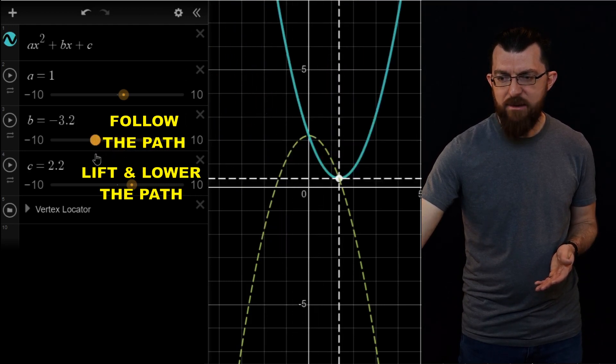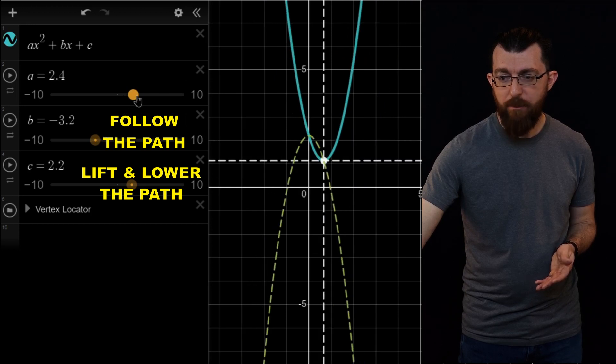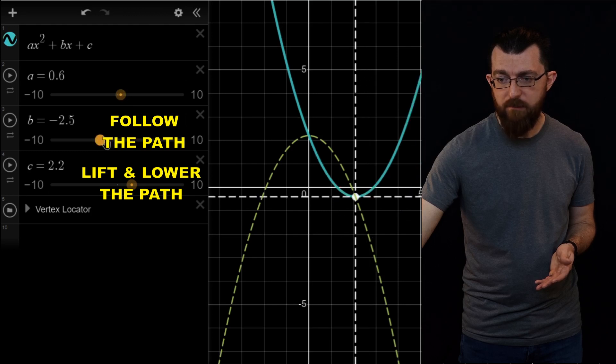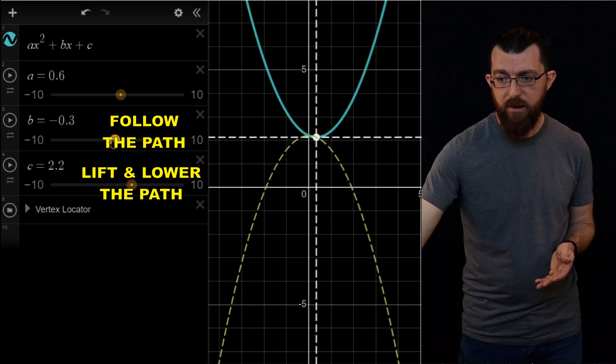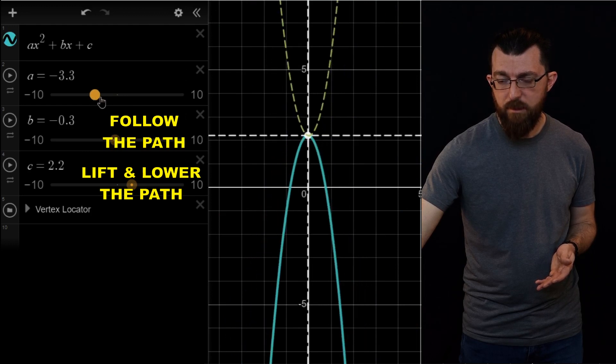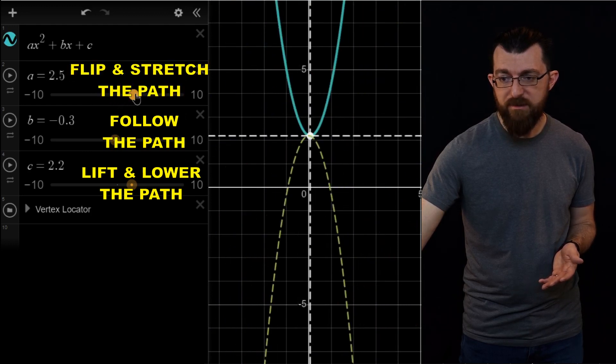What does A do to that path? Well, if I move A up, it makes the path more pinchy. And if I move A down, it makes the path wider. Let me move B so we can still see it here. And it slides it. Yep, they just kind of switch places.